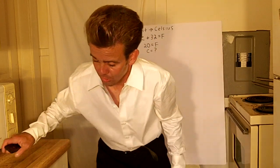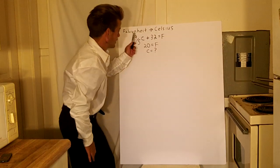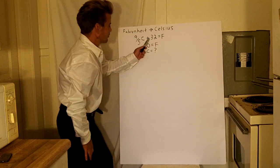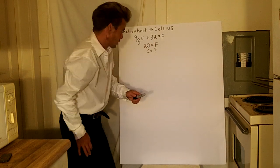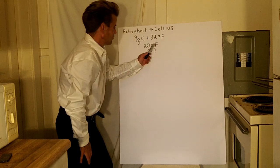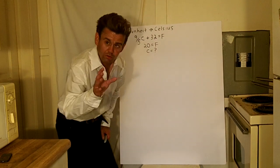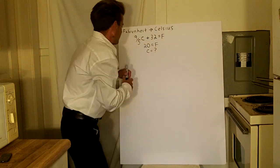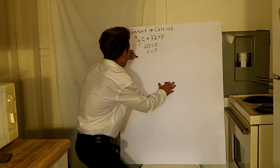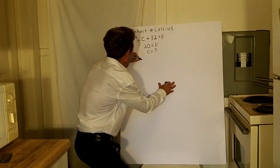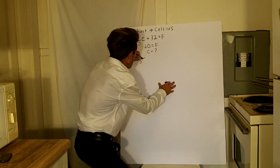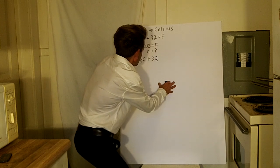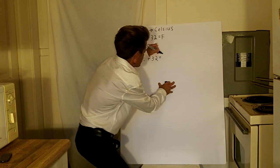So let's get started. The first thing here is we're going to convert Fahrenheit to Celsius. Here's the formula: 9 fifths of C plus 32 equals F. So a common temperature — let's say it's 20 degrees Fahrenheit. What does that equal in Celsius? You've just got to fill out the formula, so we have 9 fifths of C plus 32 equals 20, because 20 is the Fahrenheit.